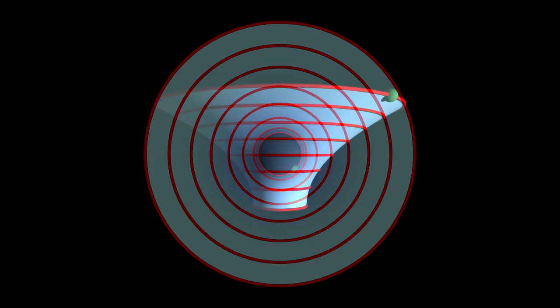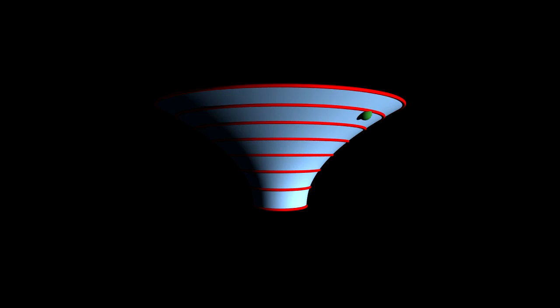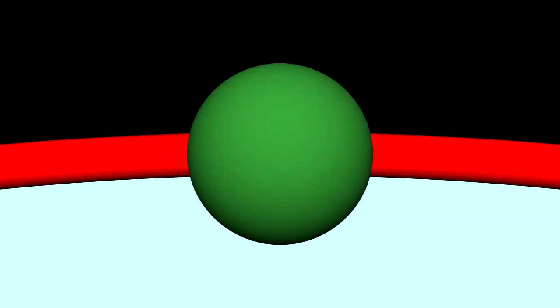We can imagine the light pulse moving at a constant speed down into the funnel-shaped embedding diagram. From our perspective above, it appears to slow down. But viewed from another perspective, it clearly moves at a constant velocity.